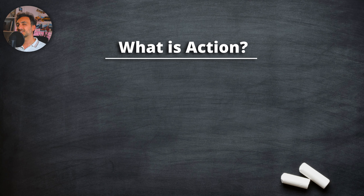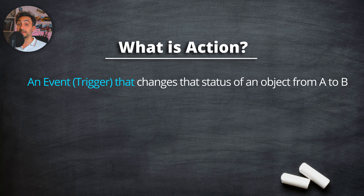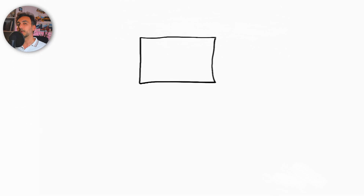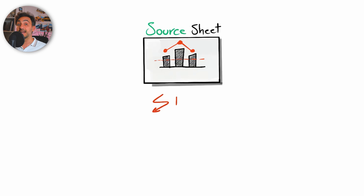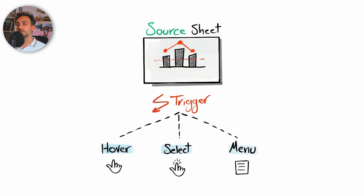What is an action? An action is a change of status — because of a specific event or trigger, the status of an object can change from A to B. The object in Tableau is going to be the visualizations. The starting point we call in Tableau is the source sheet, and the action can be triggered by user interactivity: by hovering the mouse on the data, by selecting or clicking on the data, or by using the menu.